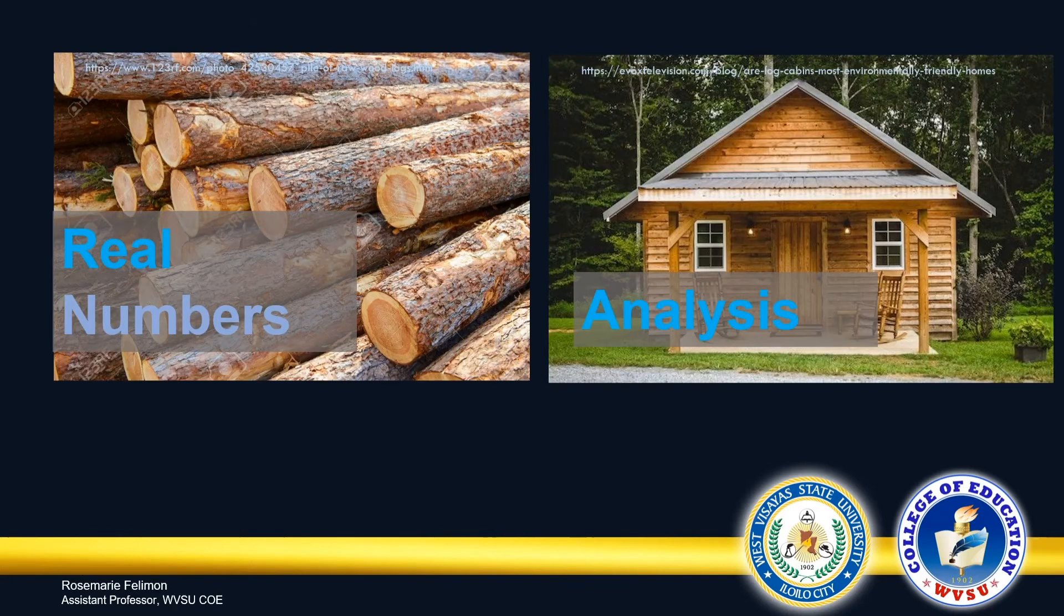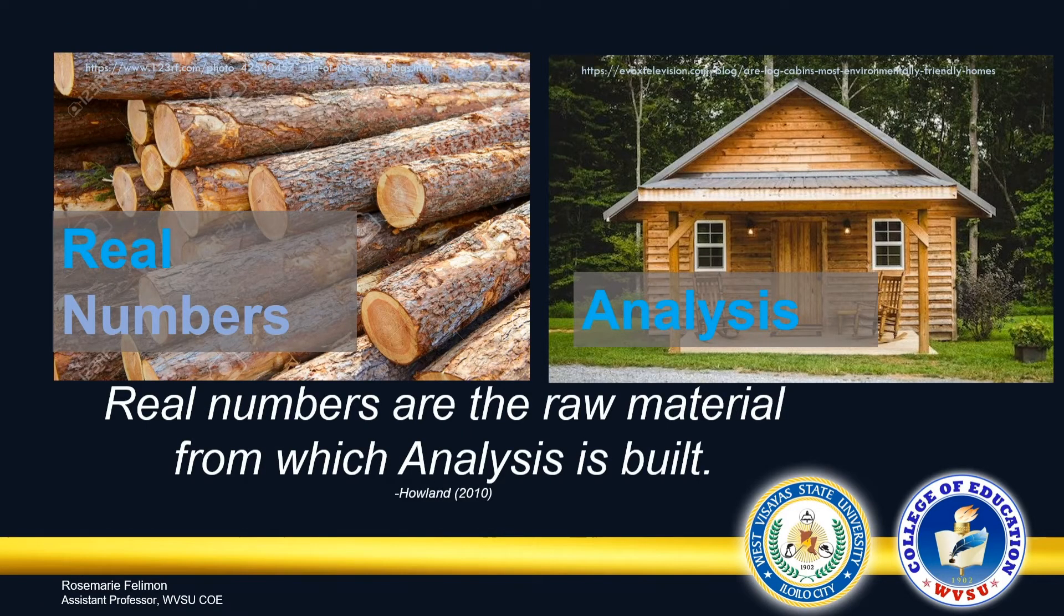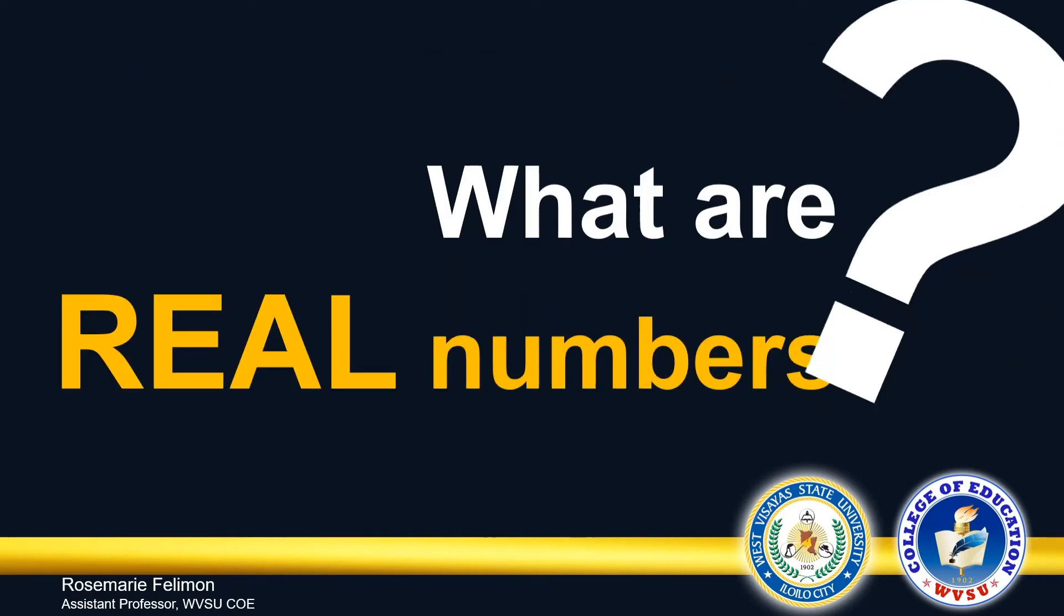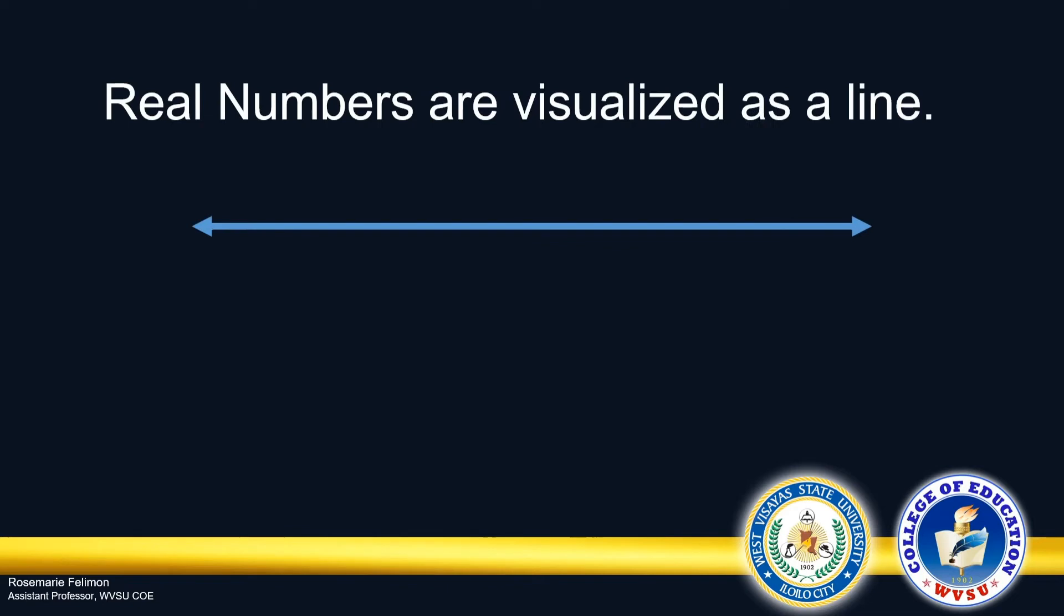Real numbers are considered to be the raw materials for analysis. But the question is, what are real numbers? Real numbers can be visualized as a line. There are infinitely many points in a line. In the same manner that there are infinitely many real numbers, each point on this line represents a real number.